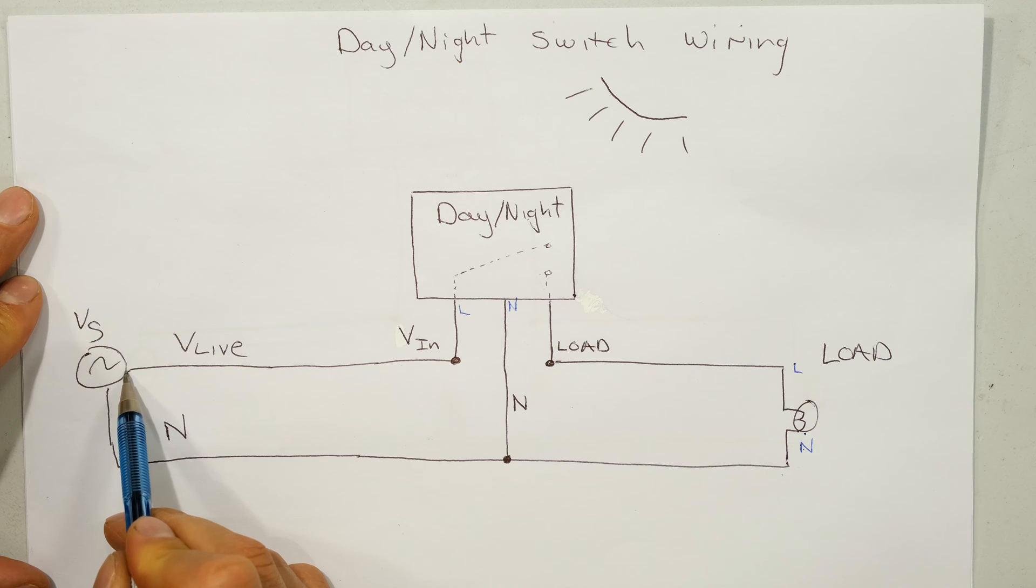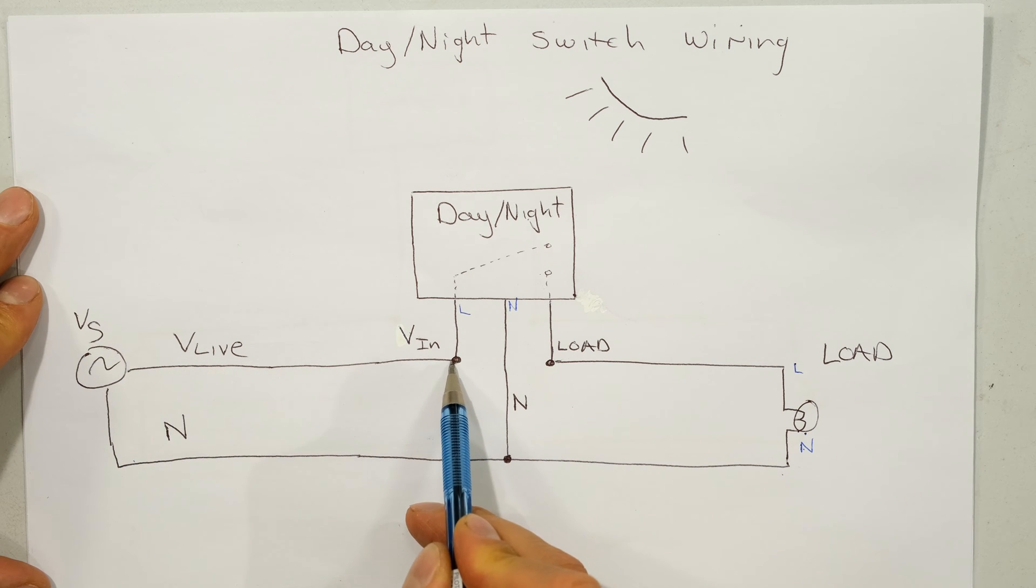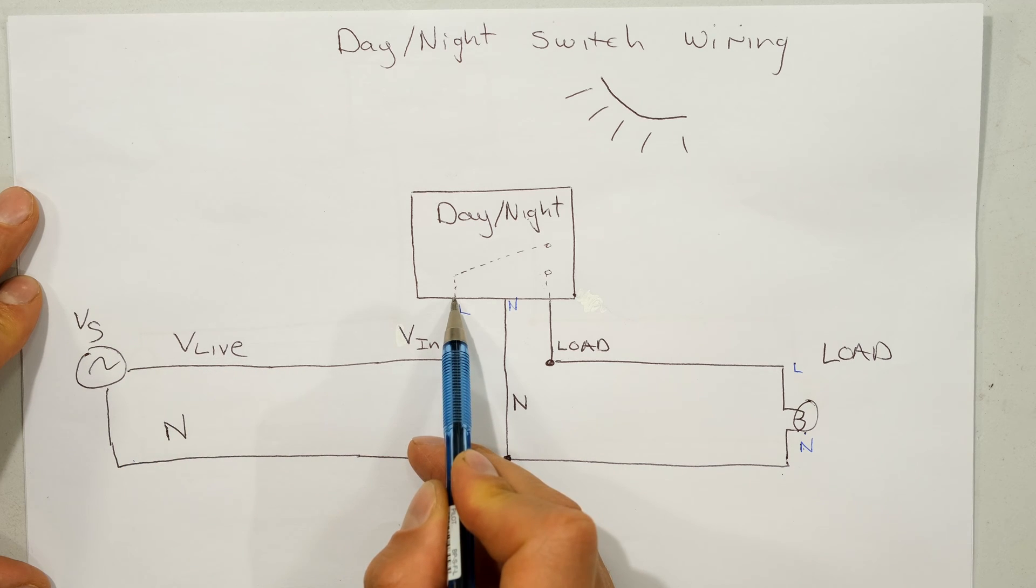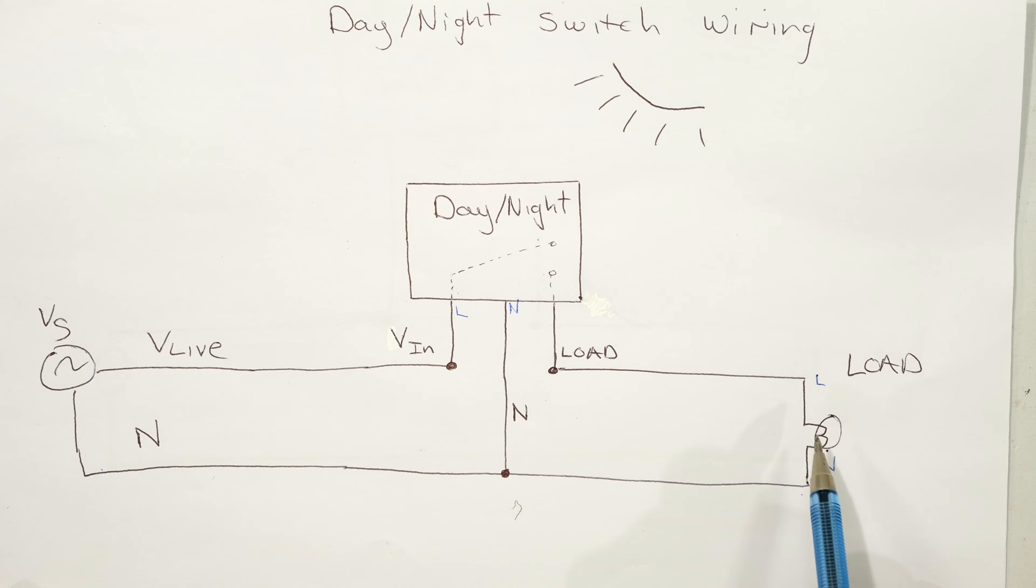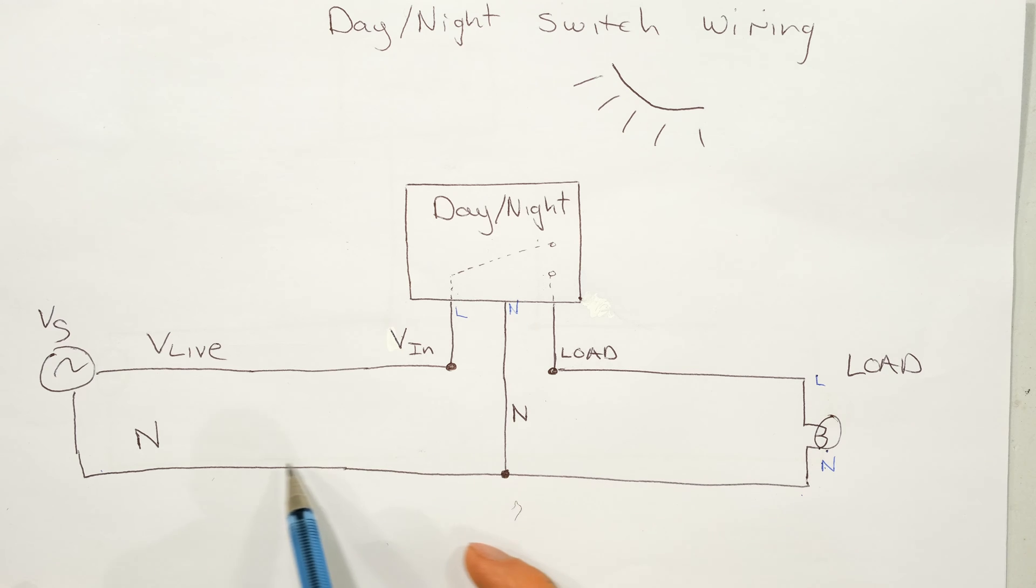So what happens is, from the output of the supply, there goes my live, goes into the day-night switch. The output of my day-night switch goes to my load. Then the light needs the neutral wire, which is connected to the supply.